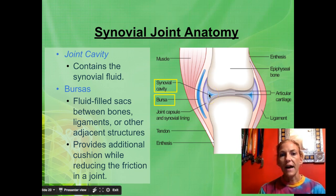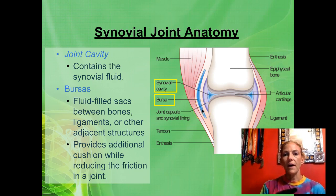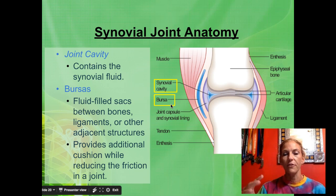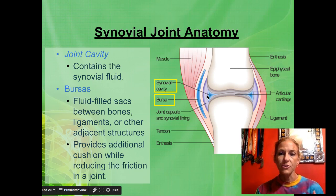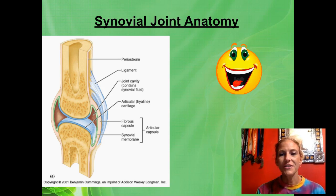Another fluid found in joints is contained within little sacs called bursas. A bursa is a fluid-filled sac that helps with cushioning — kind of like a liquid pad. You may have heard of 'water on the knee,' which is when that bursa fills up with fluid, such as lymphatic fluid or plasma leaked from the bloodstream trying to heal an injury, accumulating in the bursa.